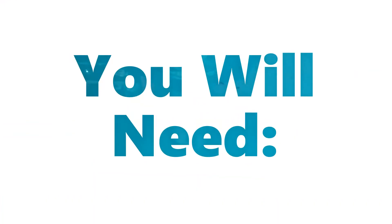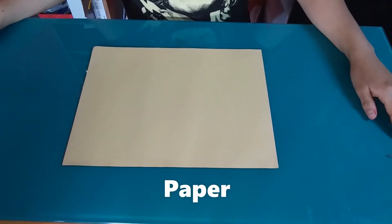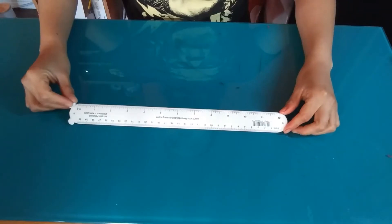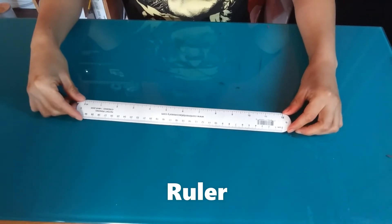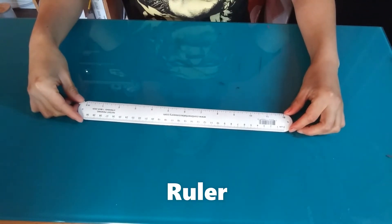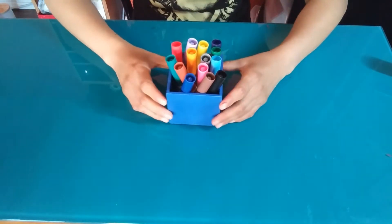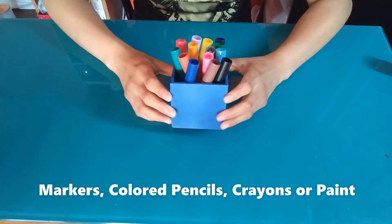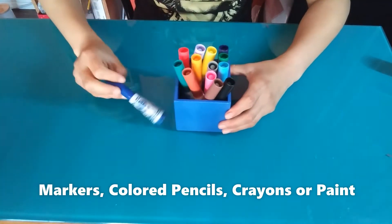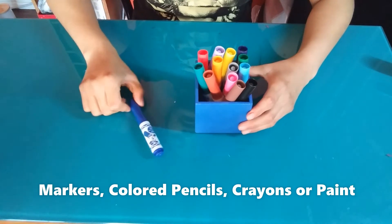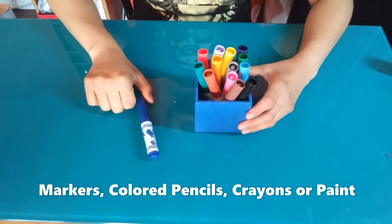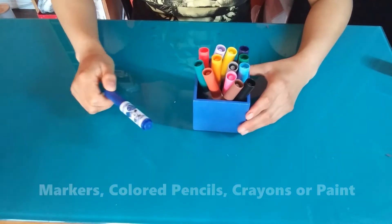For this activity, you are going to need paper, a ruler, and some markers. But if you don't have markers, you can use colored pencils or crayons or even paint if you have some.